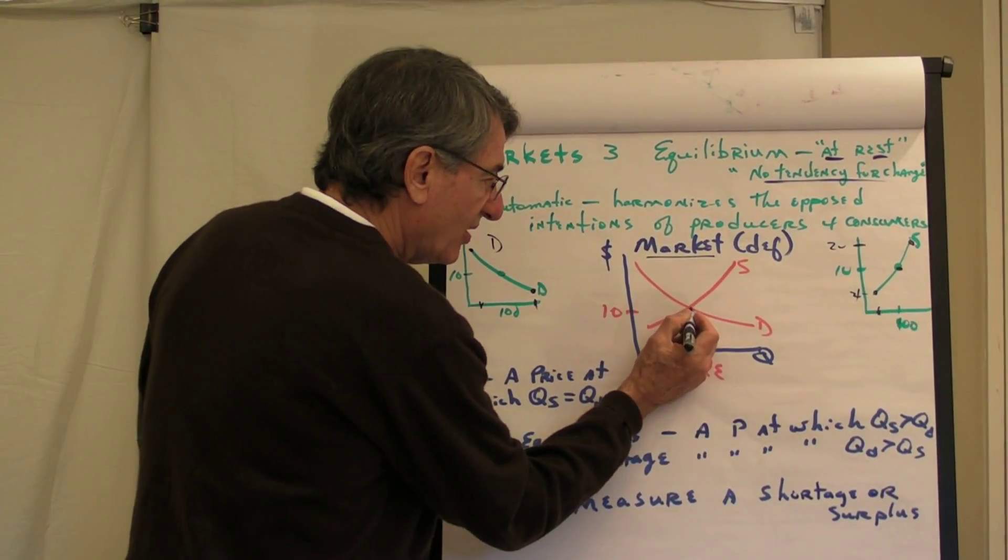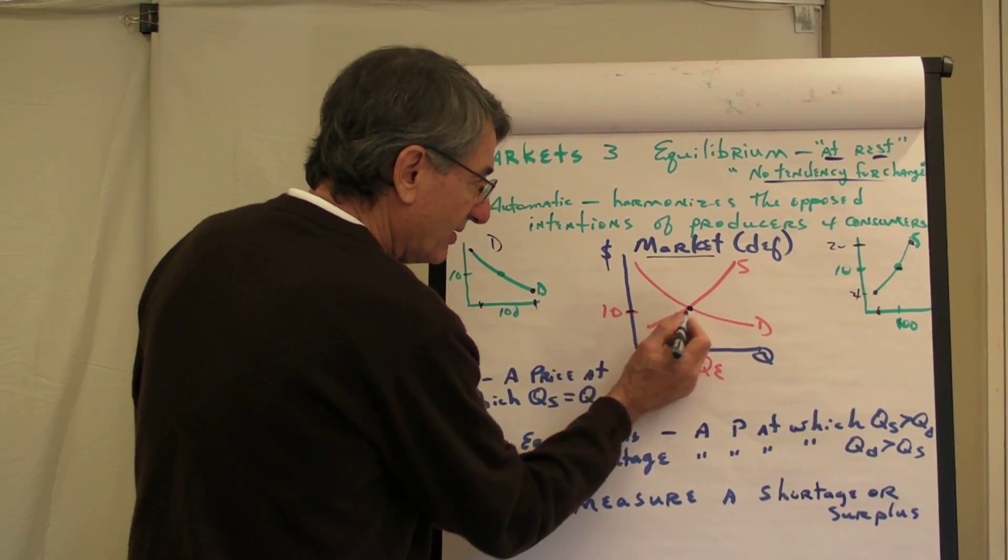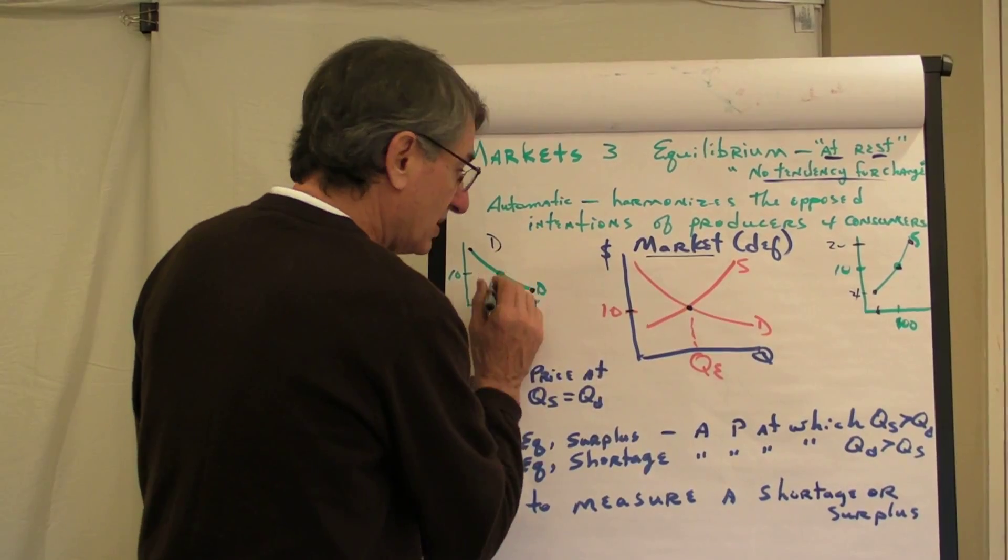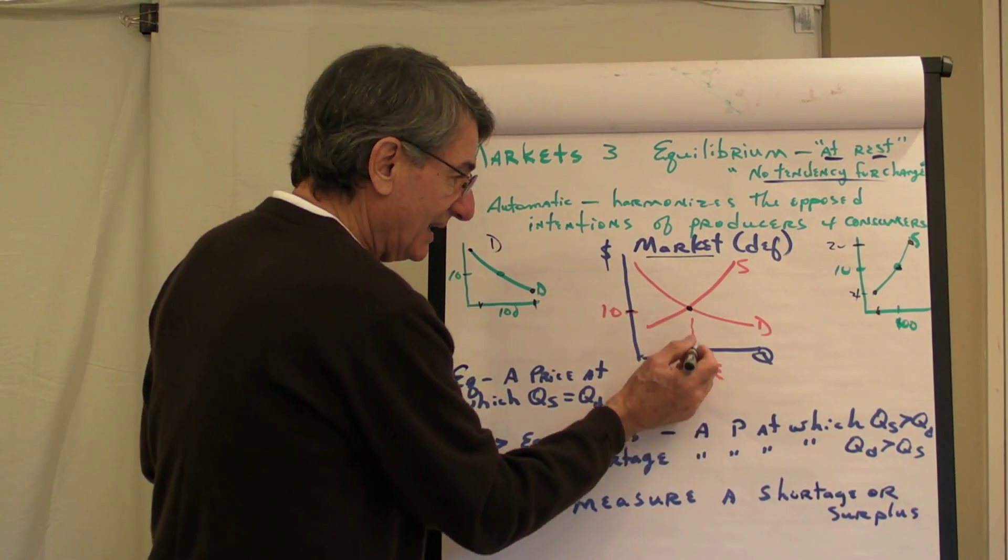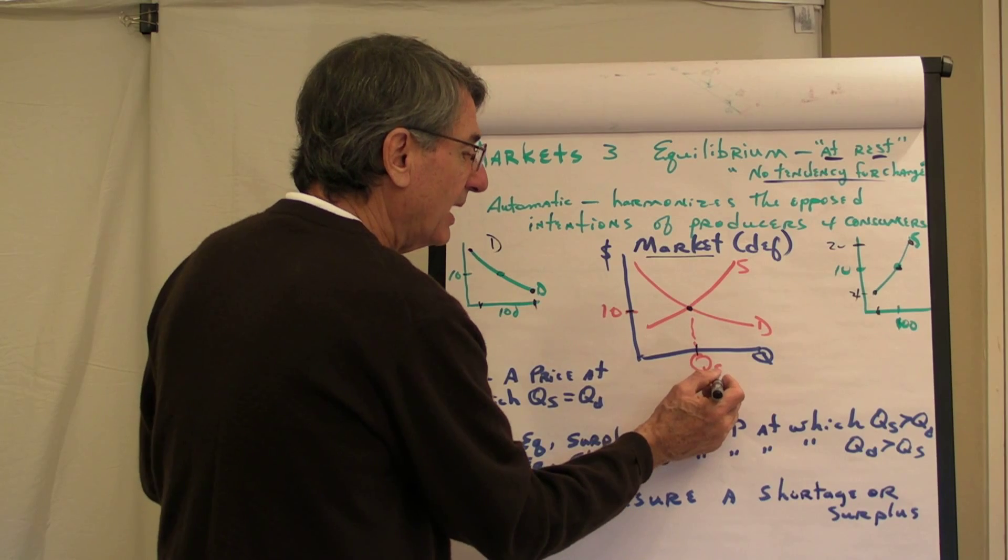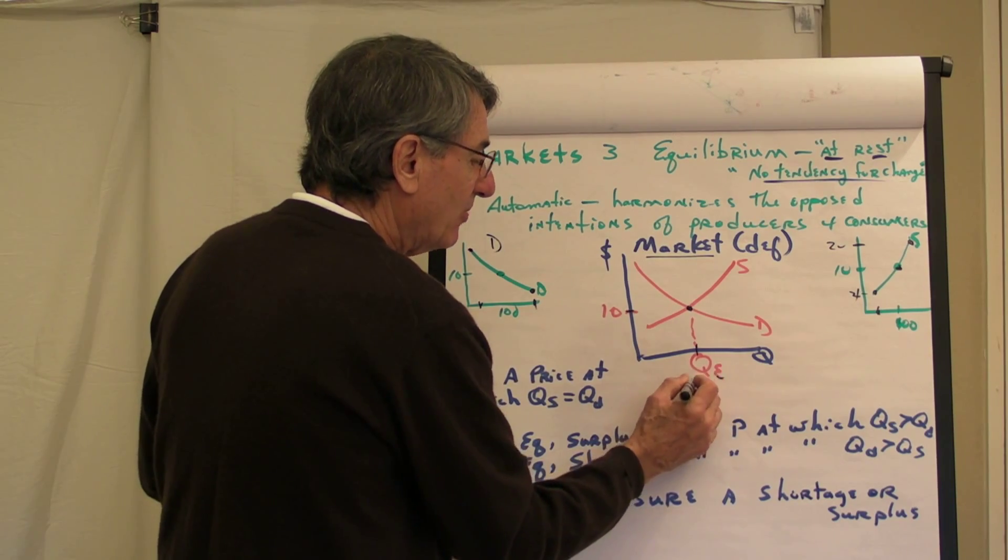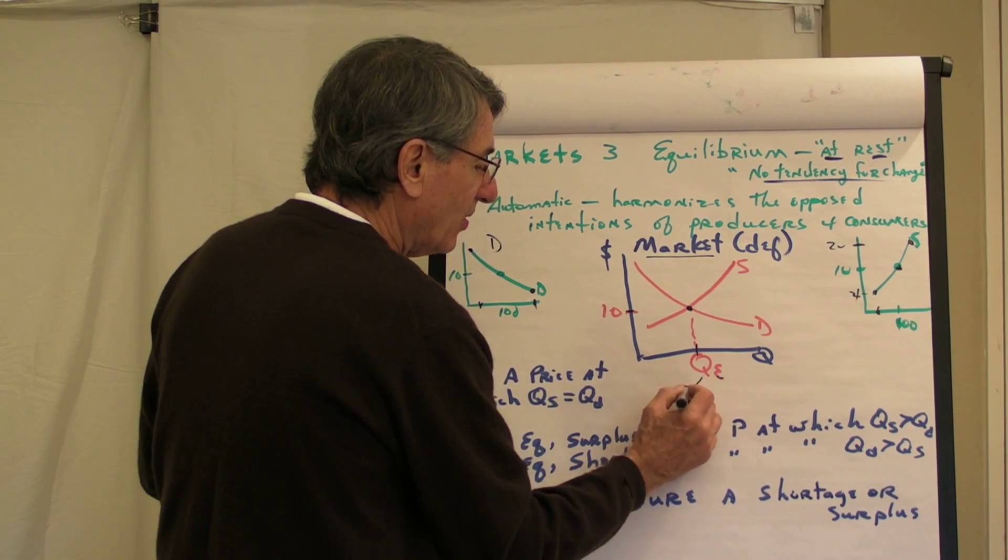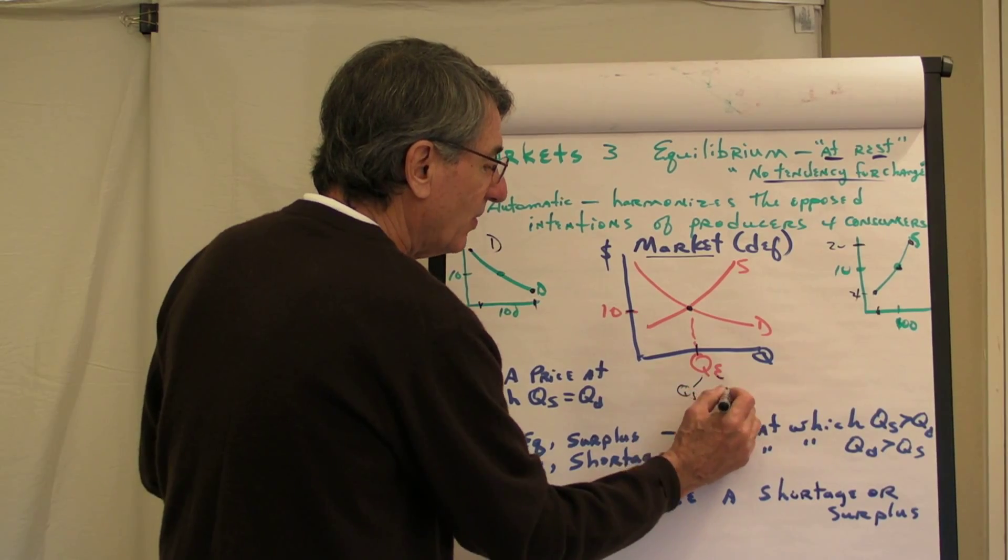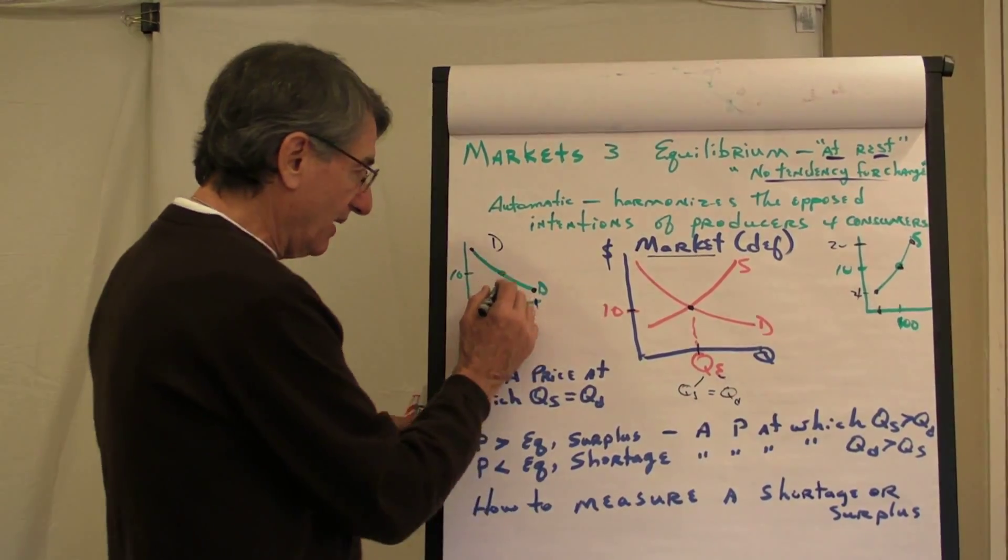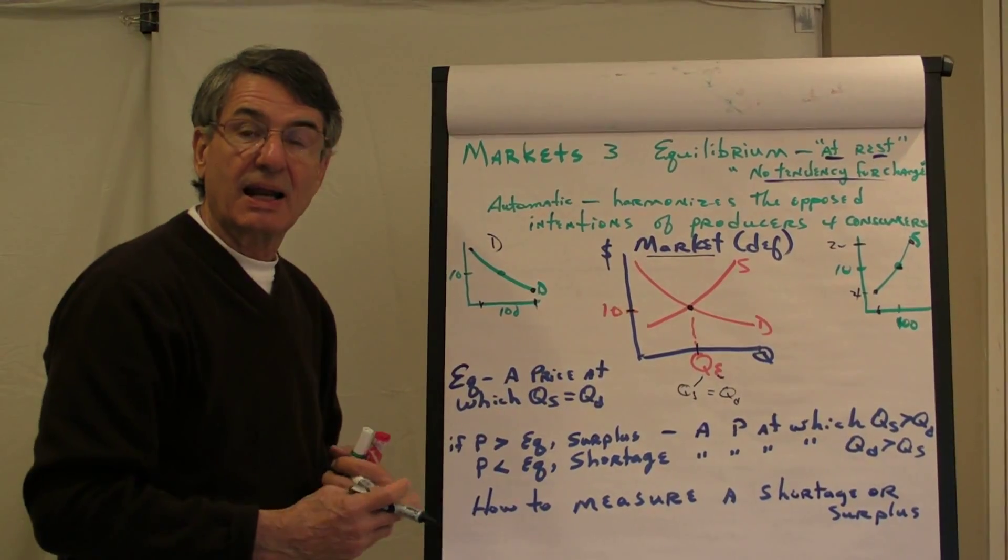And look at this. There is one price, $10, and only one, that harmonizes the opposed intentions of producers and consumers. And at that price, there will be equilibrium. And an equilibrium quantity is where quantity supplied equals quantity demanded. And sure enough, 100 in both cases.